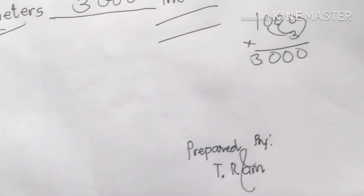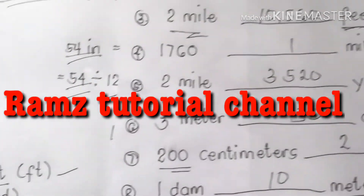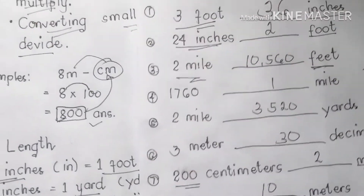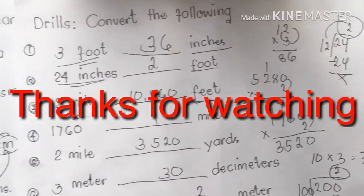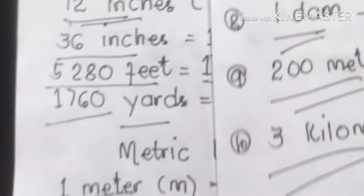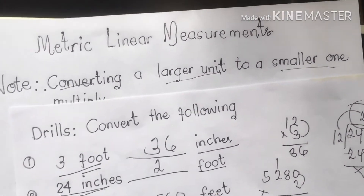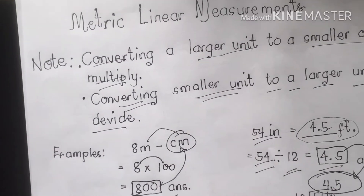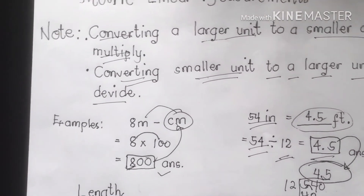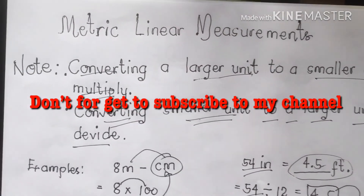Remember, in doing this conversion class, we have different equivalents for length and metric linear measurements. All we have to do is check first your equivalent, and whether you divide or multiply. That is how you convert metric linear measurements — from inches to meter, inches to yard, feet to mile, yards to mile, et cetera. Good day and so long class, thank you for watching RAM's Tutorial. God bless us everyone, happy weekend.